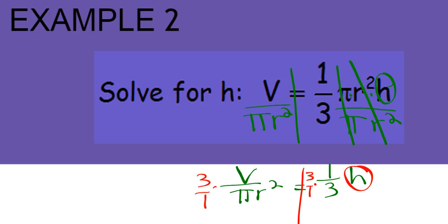Now, three times v is going to be 3v and one times pi r squared is pi r squared and that equals h. Once I've isolated the variable, I know I'm finished.